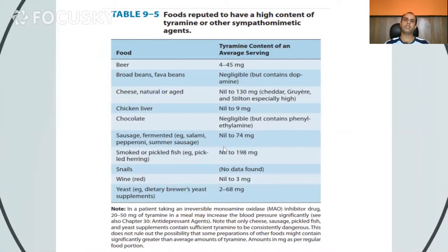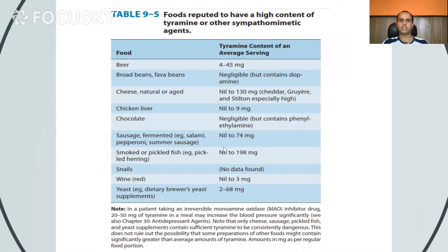Foods that are known to have a high content of tyramine or other sympathomimetic agents include: beer with 4 to 45 mg of tyramine per average serving; broad beans and fava beans, which are negligible for tyramine but contain dopamine; natural cheeses containing 1 to 30 mg per serving; chicken liver; chocolate; sauces; smoked fish; snails; and wine. These foods should all be avoided by patients taking monoamine oxidase inhibitors.